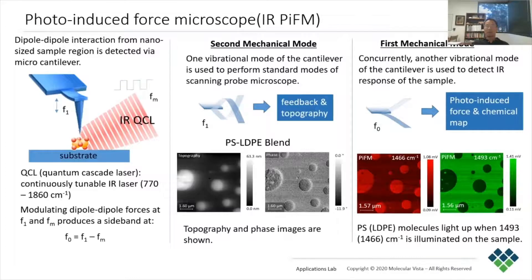In PIFM, we use two mechanical eigenmodes of the AFM cantilever as two independent force sensors to measure AFM topography and photo-induced sample response concurrently. In order to keep the tip close to the sample surface, we operate the AFM with a small drive at the second mode, F1, which has a force constant in excess of 1000 N per meter.